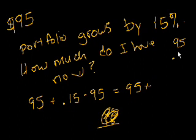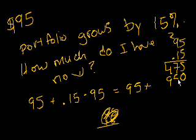95 times 0.15. 5 times 5 is 25. 9 times 5 is 45, plus 2 is 47. 1 times 95 is 95. Bring down the 5, 12, carry the 1, 15. And how many decimals do we have? 1, 2. 15.25.